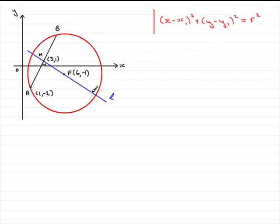We don't have the radius, but we can use the point AP to work out what that radius is. So how do we go about finding r squared? Well, that's very easy — all we need to do is essentially use Pythagoras' theorem.